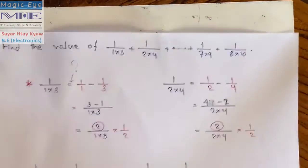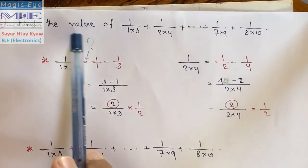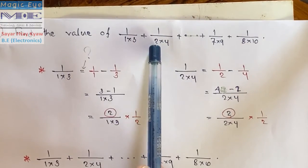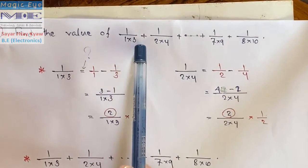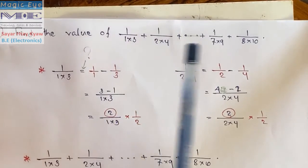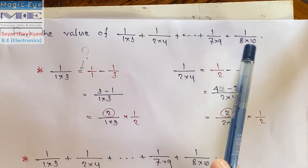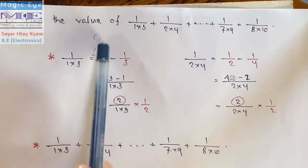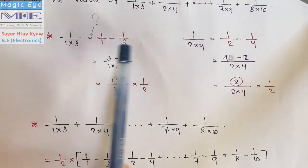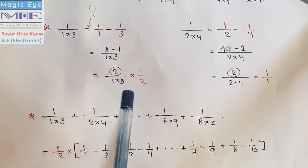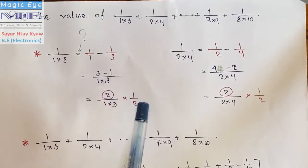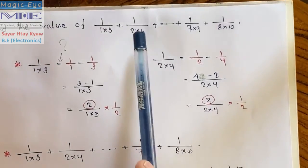Now for the next example: 1 by 1 into 3, 1 by 2 into 4, 1 by 3 into 4. This becomes 3 minus 1 in the denominator.